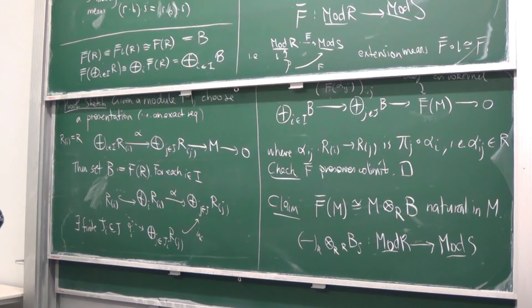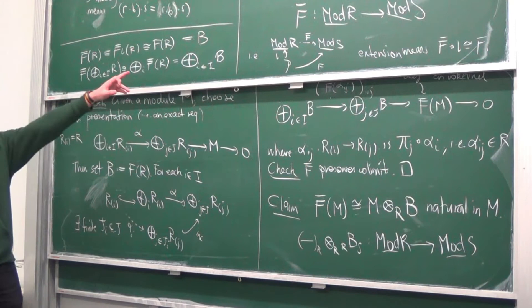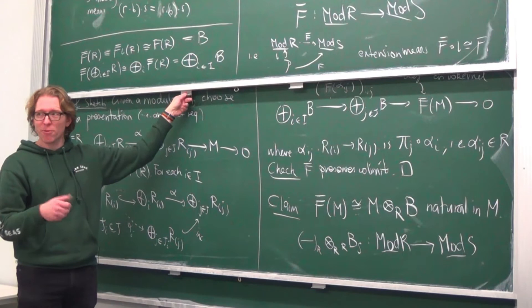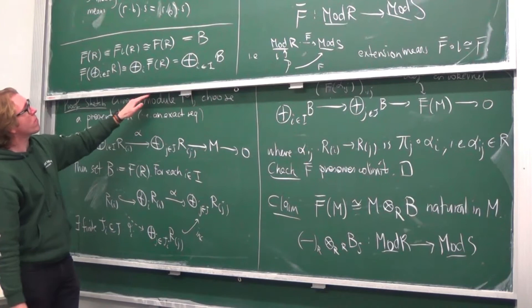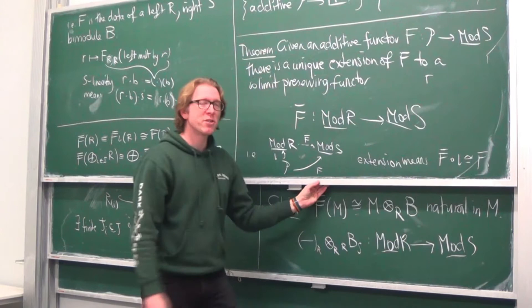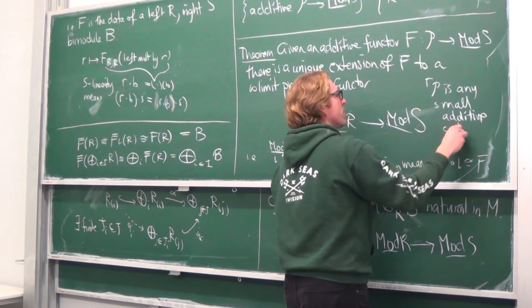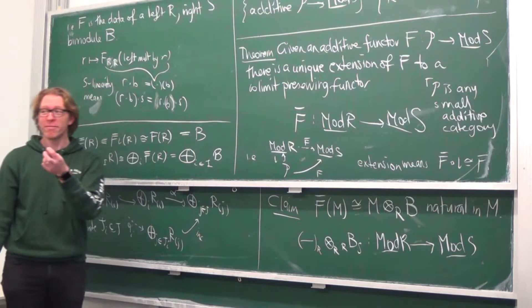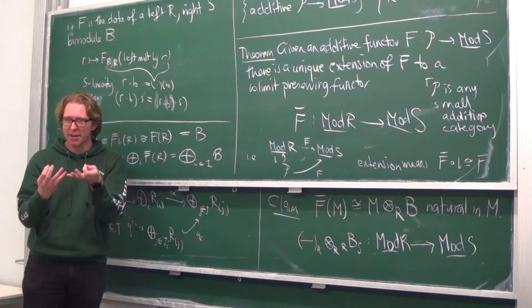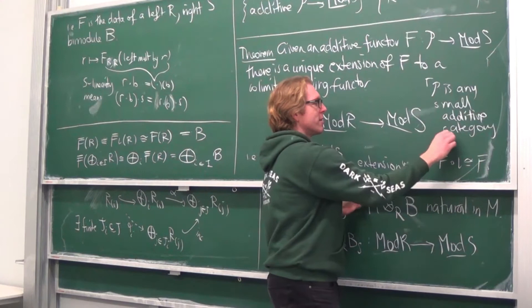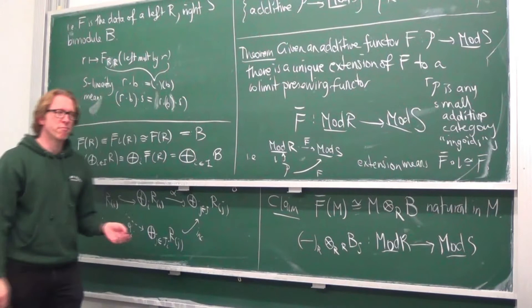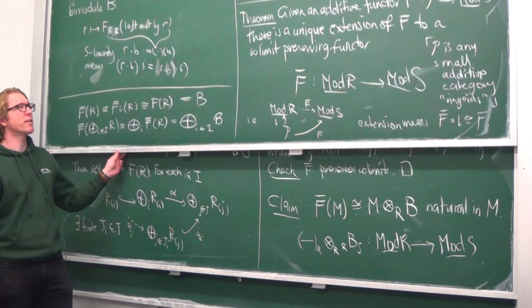In the cases we're about to talk about, the analog of the category of modules is the category of pre-sheaves on a small category — the small category plays the role of the ring. In fact, the theorem holds in the context where P is any small additive category: an additive category of one object is a ring, and a small additive category with multiple objects is sometimes called a ringoid. The same proof goes through; nothing is special about a single object.